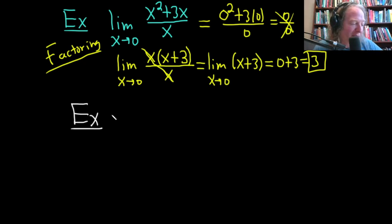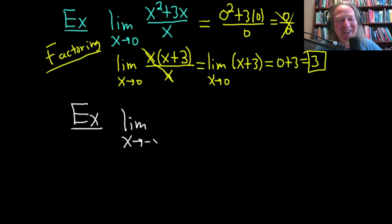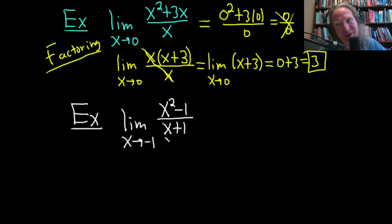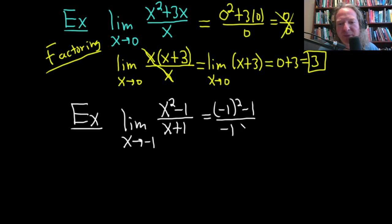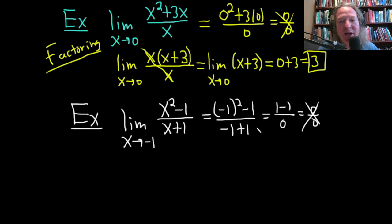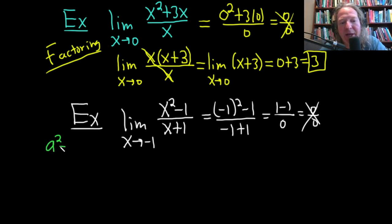Let's do another one: the limit as x approaches -1 of (x² - 1) over (x + 1). If you plug in -1, you get (-1)² - 1 over (-1 + 1), which is 0 over 0. Everything falls apart, so we need to do something else — and of course that something else is factoring.